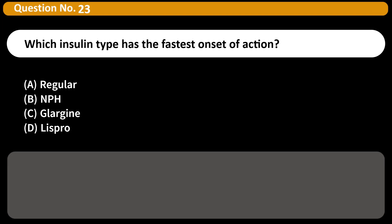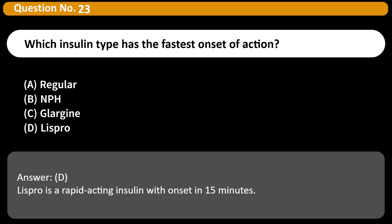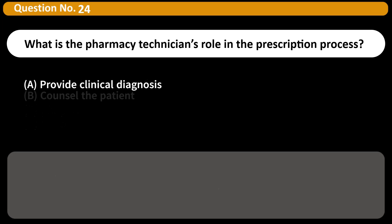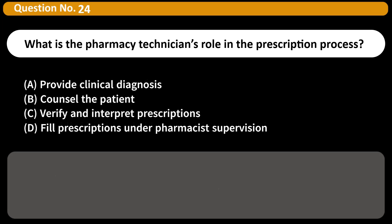Which insulin type has the fastest onset of action? A. Regular. B. NPH. C. Glargine. D. Lispro. Answer: D. Lispro is a rapid-acting insulin with onset in 15 minutes.